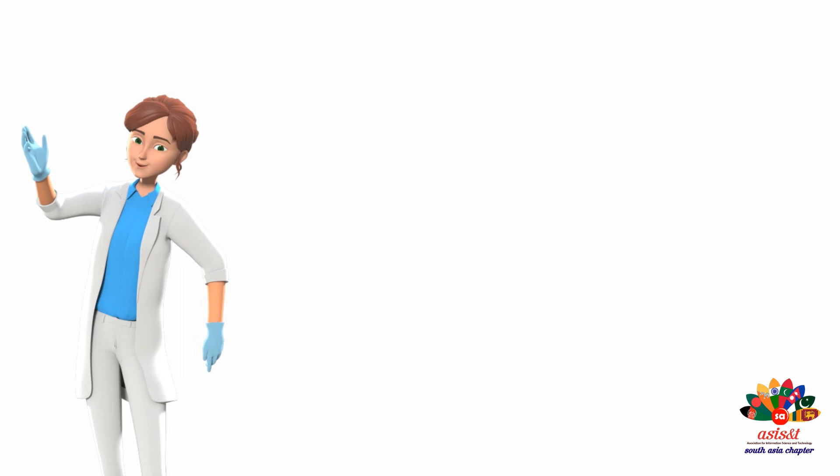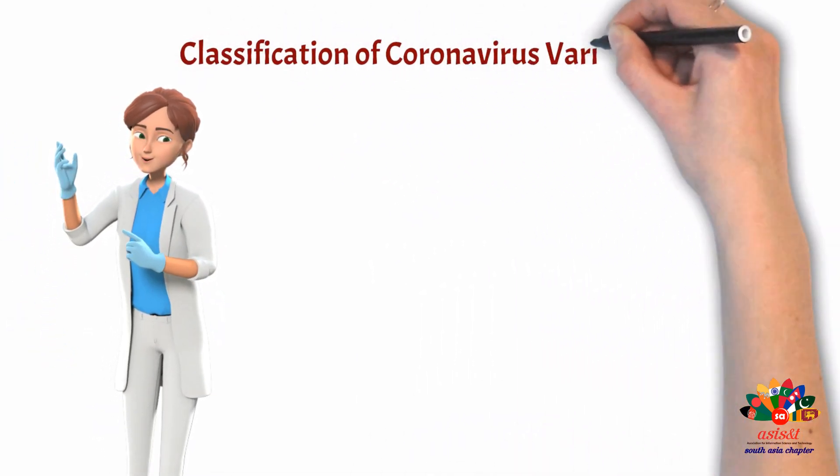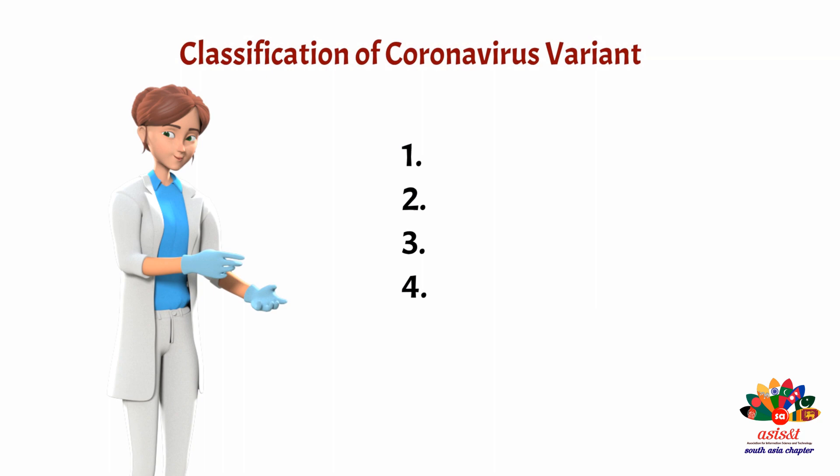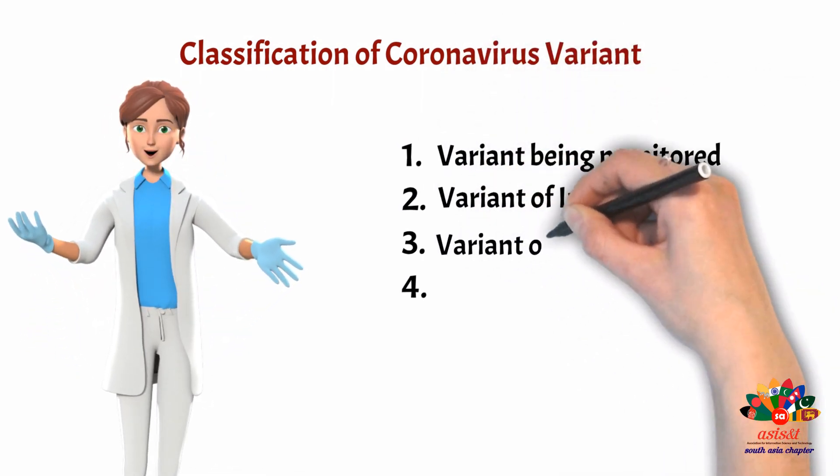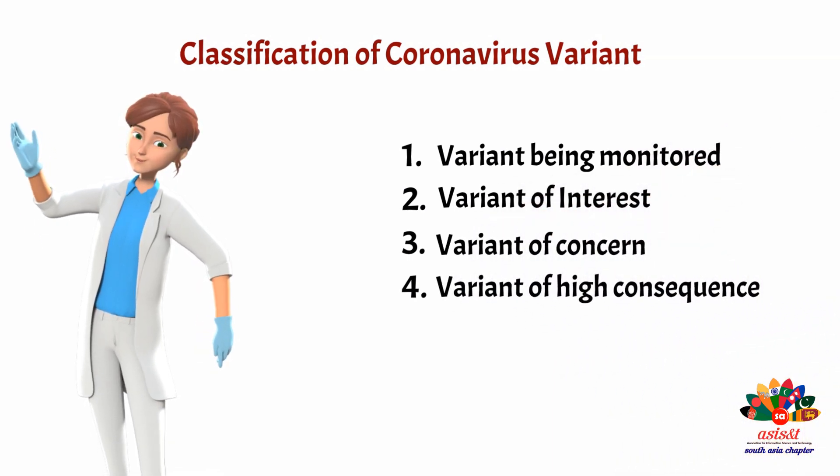The Centers for Disease Control and Prevention classified coronavirus variants into four categories: variant being monitored, variant of interest, variant of concern, and variant of high consequence.